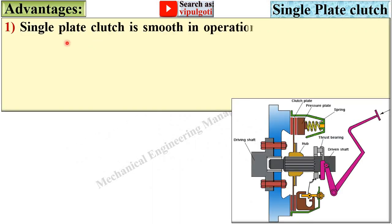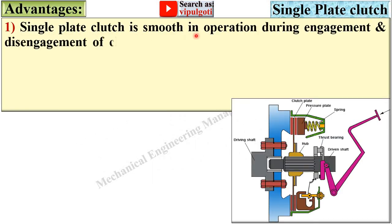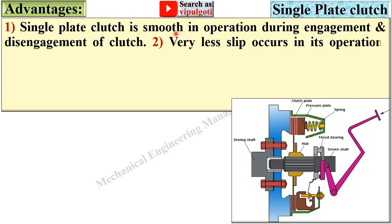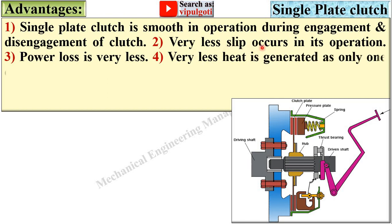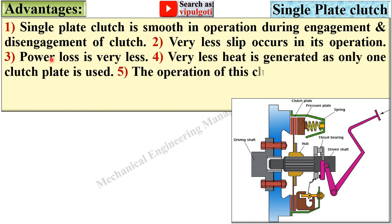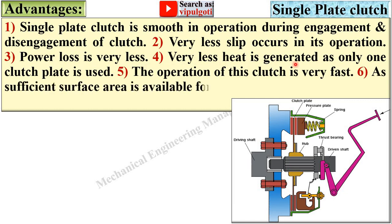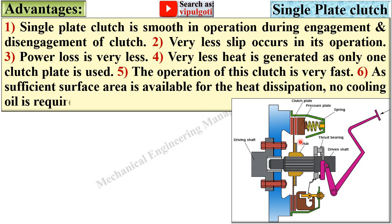Advantages of the single plate clutch: it is smooth in operation during engagement and disengagement. Very less slip occurs in its operation. Power loss is very less. Very less heat is generated as only one clutch plate is used. The operation of this clutch is very fast. As sufficient surface area is available for heat dissipation, no cooling oil is required.